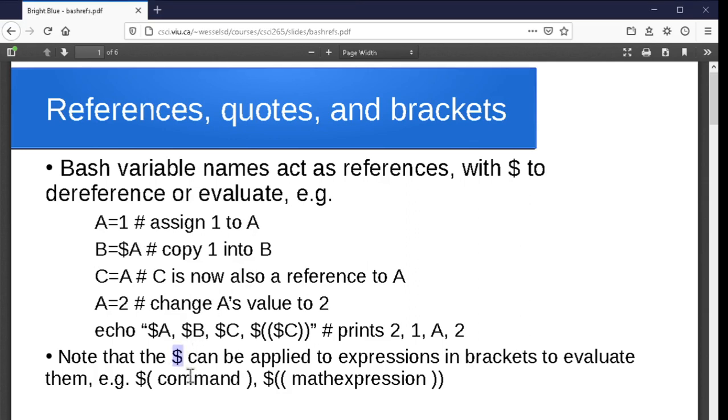Again, the dollar we throw in front of something we want to evaluate pretty much. So if we've got a command that we want to run and capture the result, we can use the dollar and then round brackets around the command to go off and capture whatever that spews out. And we'll talk about that in more detail soon. Or we've already seen with the math expressions, if we use the double brackets around a math expression and we throw the dollar sign in front of it, we'll capture whatever the result of that math expression happens to be.